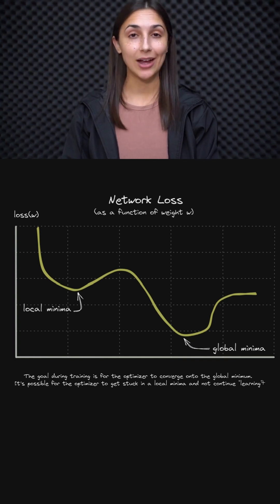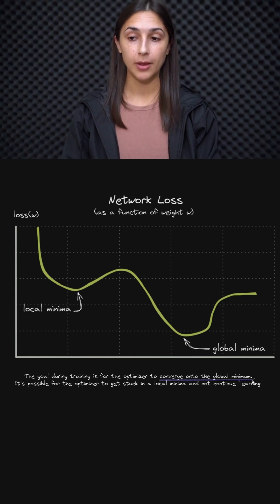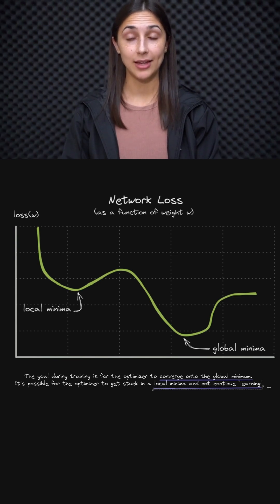We should understand now that the goal of the network is to converge onto the global minimum. But as we can understand, it's possible for the optimizer to get stuck in a local minimum and not continue learning and eventually reaching the global minimum.